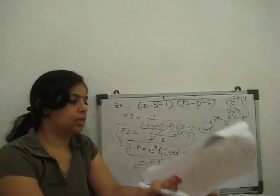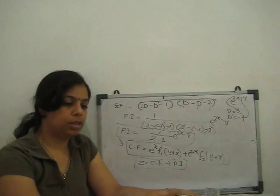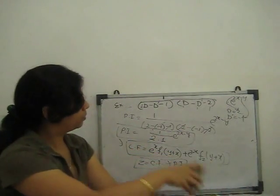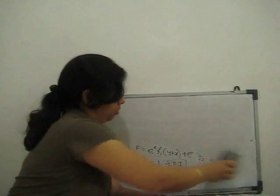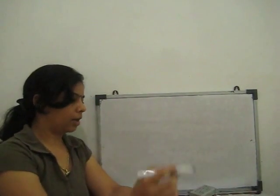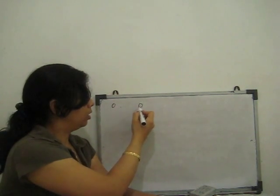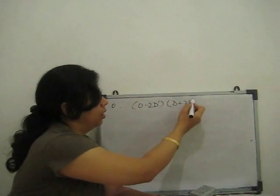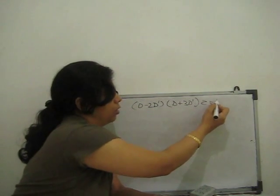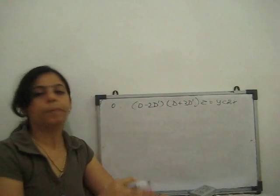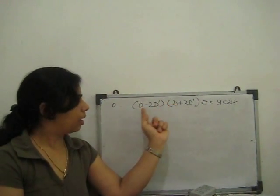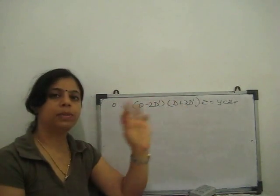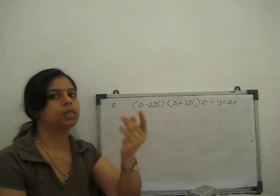Next I will discuss one more example on the homogeneous form, because the homogeneous form is more difficult. The question is: solve (D − 2D')(D + 3D') z = y·cos(x). The first term has order two, and this is also order two — each and every term has the same order, so this is homogeneous.